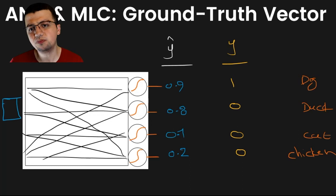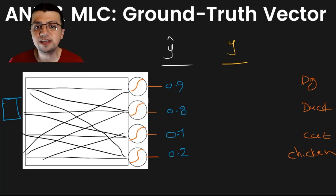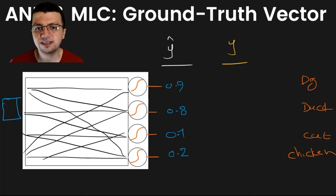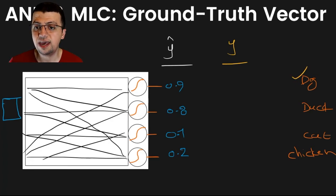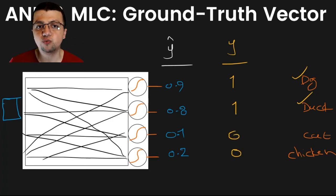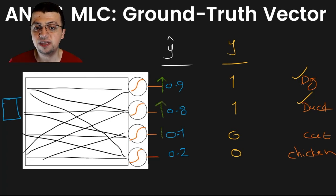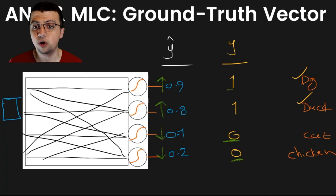Things are different when it comes to multi-label classification. Here, more than one class label can be true at the same time. So if your input data belongs to the first and second class — a dog and a duck are both present in the image — then your ground truth vector is not a one-hot encoding vector anymore; it's multi-hot encoding. In this case, your ground truth vector has to be [1, 1, 0, 0].